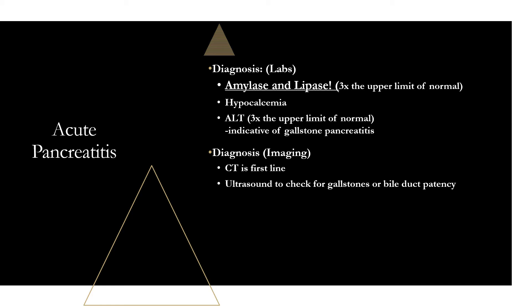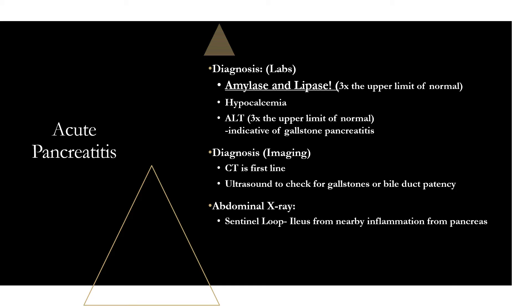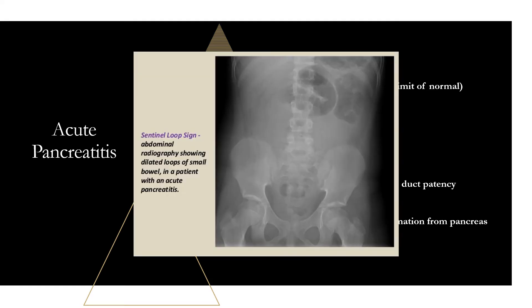X-ray is not the best imaging, but a couple of findings are worth knowing because boards like to use the key terms. On abdominal x-ray in an acute pancreatitis patient, you may see a 'sentinel loop' — this is an ileus, a paralysis of the small bowel from nearby inflammation from the pancreas. You can see a loop of bowel near the pancreas with trapped gas that isn't moving.